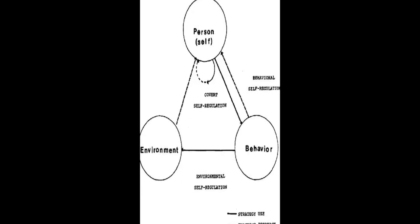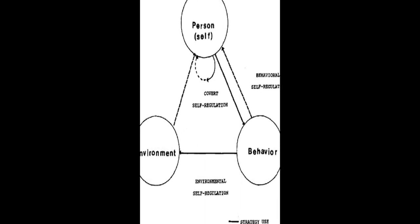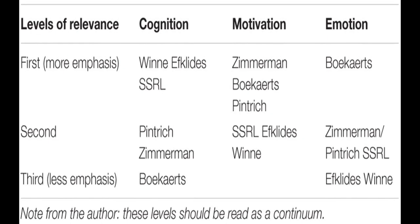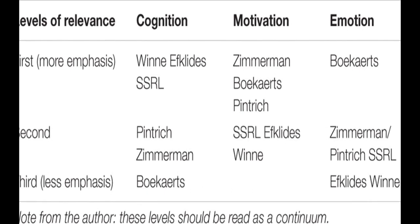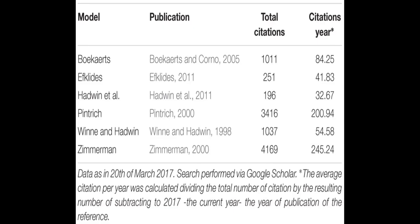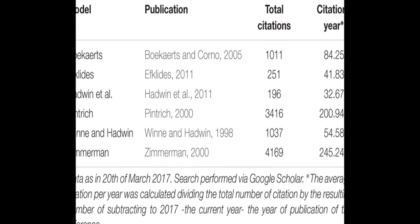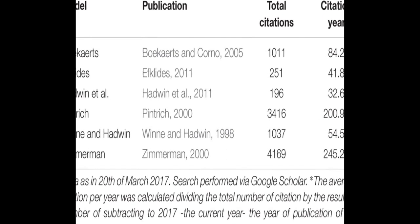including its history, description, empirical support, and instruments constructed based on the model. The models are then compared in terms of phases and sub-processes, how they conceptualize metacognition, motivation, and emotion, top-down/bottom-up, automaticity, and context.